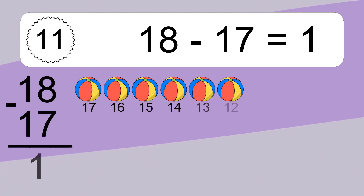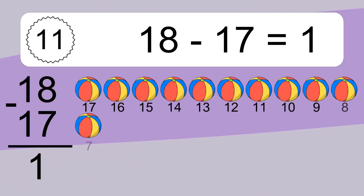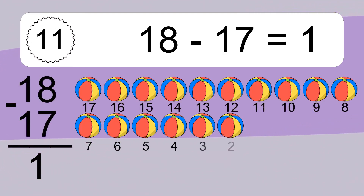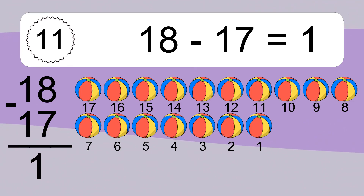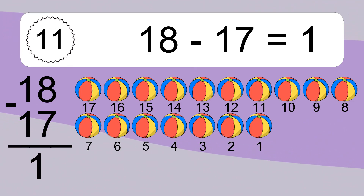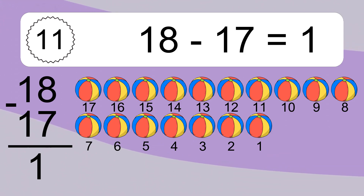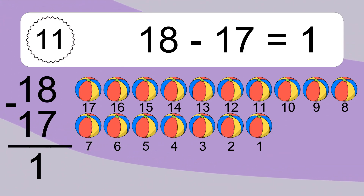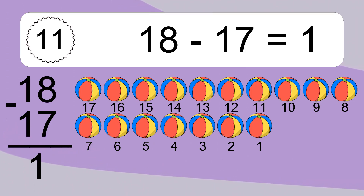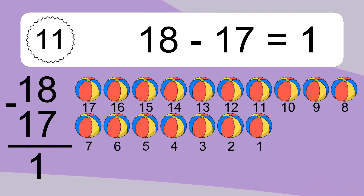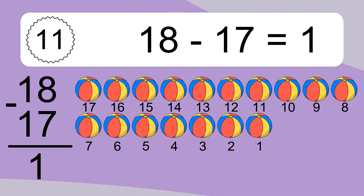4 minus 1 equals 3. Let's count it: 3. 18 minus 17 equals what? 18 minus 17 equals 1. Let's count it: 17, 16, 15, 14, 13, 12, 11, 10, 9, 8, 7, 6, 5, 4, 3, 2, 1.